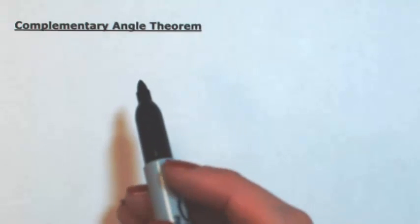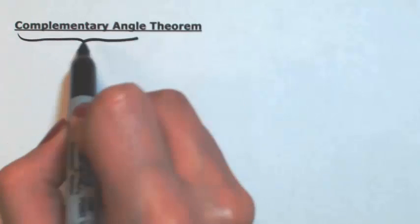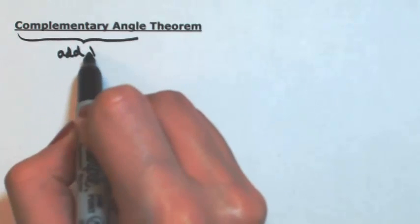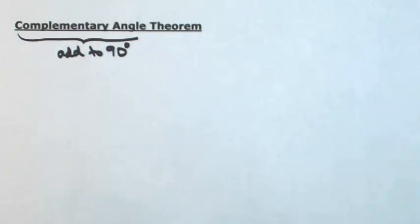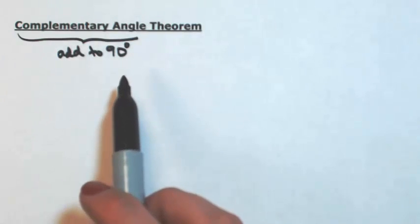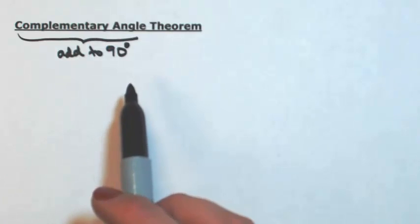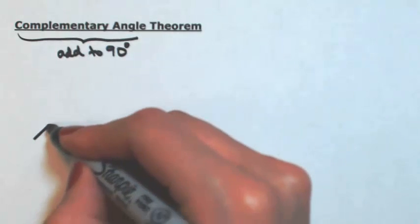Complementary angles are angles that add up to 90 degrees. So if we have a triangle and two angles add to 90, then the third angle must be 90. So really what we have here is a right triangle.